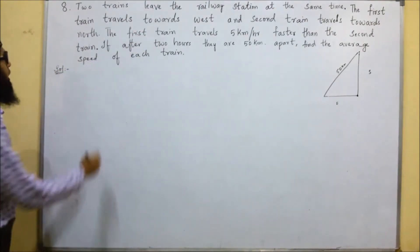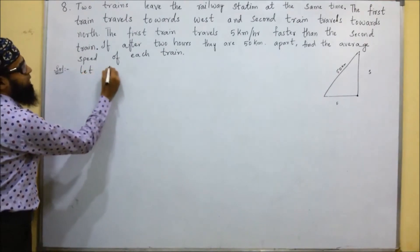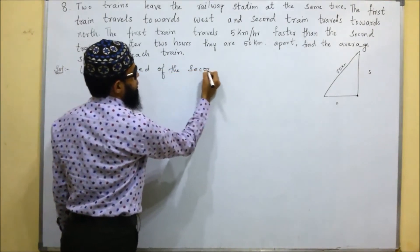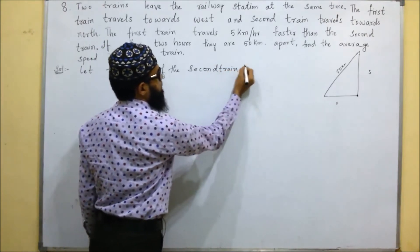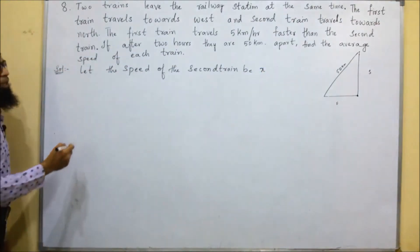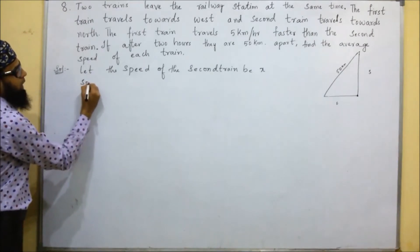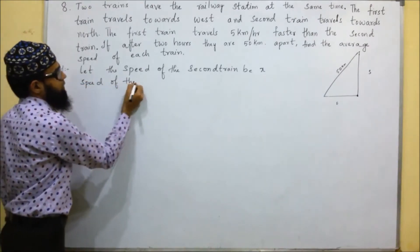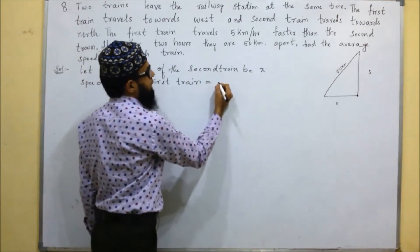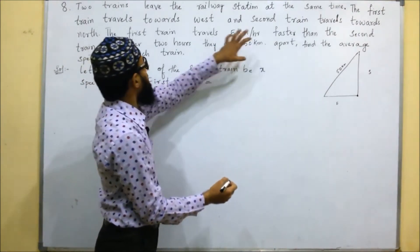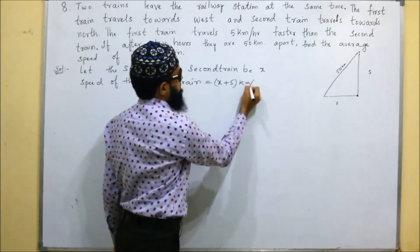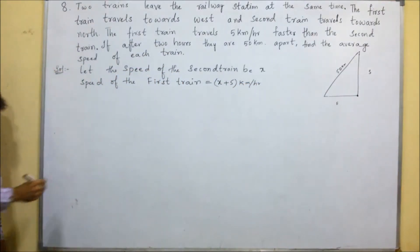We don't know the speed of the second train, so let the speed of the second train be x. If the speed of the second train is x, then the speed of the first train will be x plus 5 km per hour, since it is 5 km per hour faster.